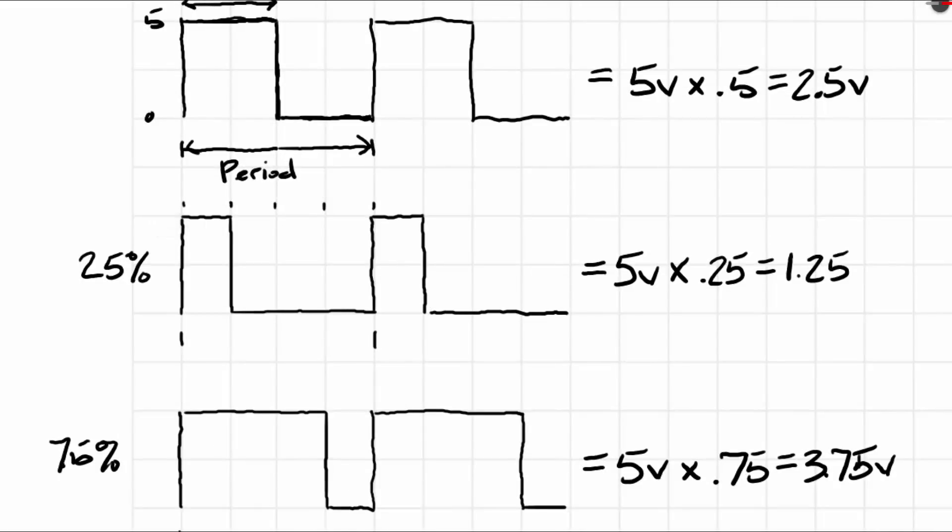In the 25% version, you can see that at 5V, it is only on for 25% of the time. So it's not on for a very long time, and it's off most of the time, which is 75% of the time it's off. So it's obvious that the 1.25V would be closer to 0V rather than the 5V.